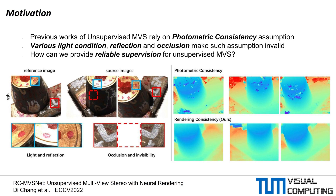In real scenarios, such assumptions become invalid due to various lighting condition changes, reflections, and occlusions. Inspired by this, we pose the question: how can we provide reliable supervision for unsupervised multi-view stereo?